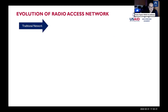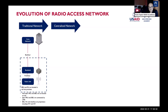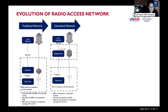The evolution of the radio access network begins with the traditional or distributed RAN, where the baseband unit and radio unit are both located at the cell site premises. With this approach, you are locked into that equipment at that location. The next evolution is the centralized RAN, where baseband units are pooled into one location — sometimes called the 'baseband hotel' — while the radio units remain at cell sites, connected via dark fiber.